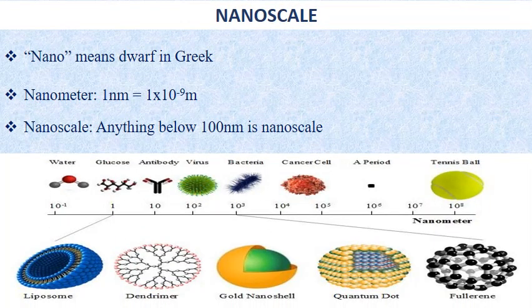Nano itself is a Greek word which means dwarf. One nanometer is equal to 1×10⁻⁹, or one billionth of a meter. The typical carbon-carbon bond length, or the spacing between atoms in a molecule, is in the range of 0.12 to 0.15 nanometers, and a DNA double helix has a diameter of around 2 nanometers.